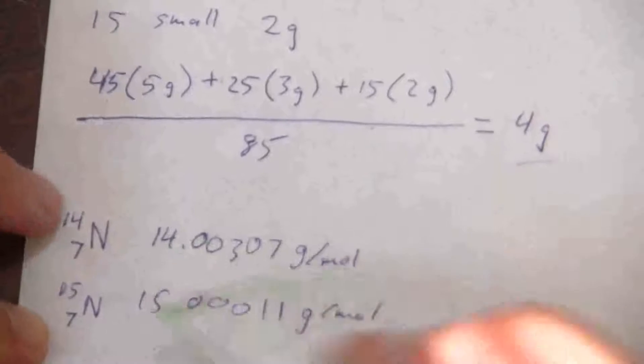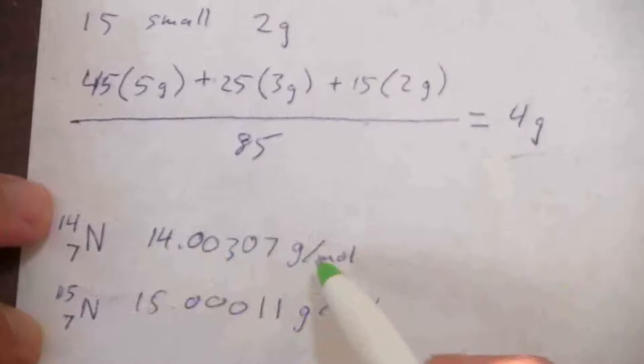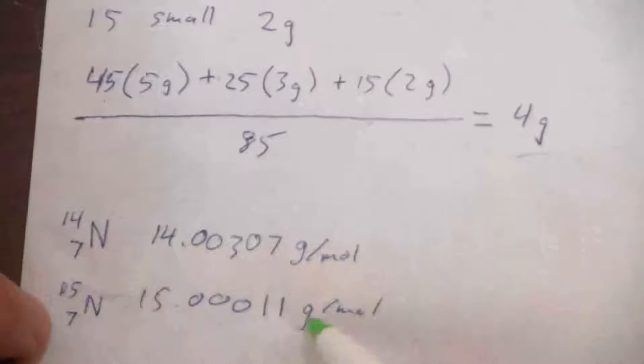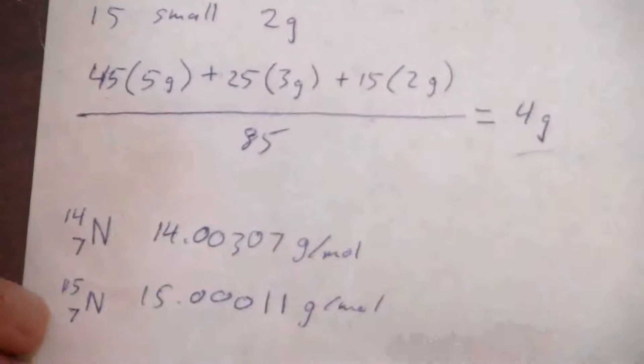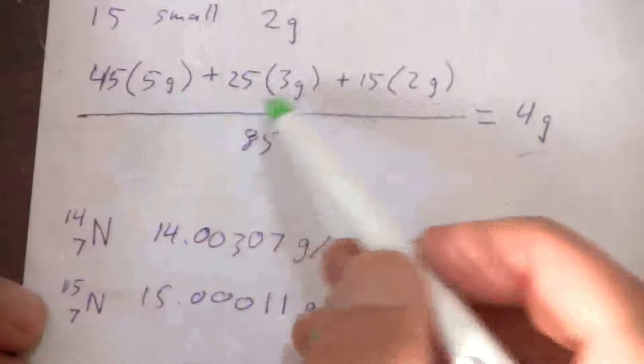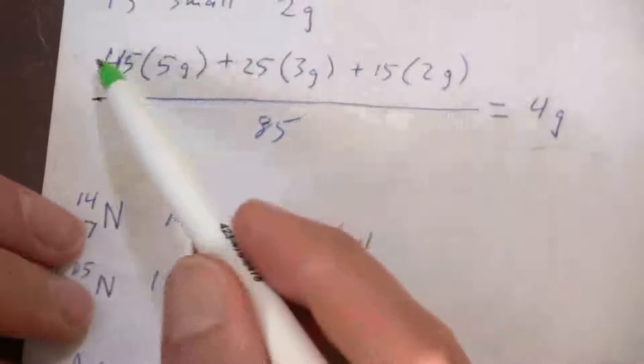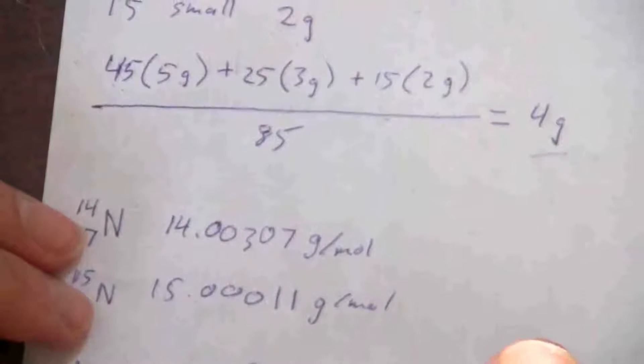Because if I just took those, add them up, divide by two, that would assume I have 50% nitrogen-14, 50% nitrogen-15. It's an equal weight. But if they have an unequal weight, as in these examples here, then I need to take that into account.